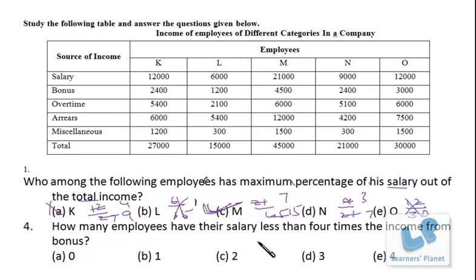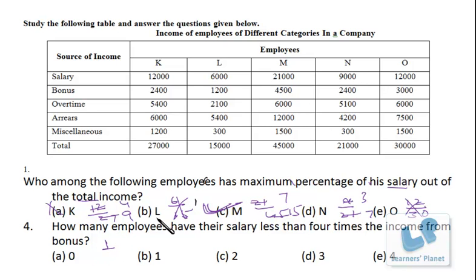How many employees have their salary less than 4 times their income from bonus? For K: 4 × 2,400 = 9,600 but salary exceeds that — not valid. For L: 4 × 1,200 = 4,800 but salary exceeds that — not valid. For M: 4 × 4,500 = 18,000 but salary exceeds that — not valid. For N: 4 × 2,400 = 9,600 which is greater than the salary of 9,000 — valid. For O: 4 × 3,000 = 12,000 which equals the salary exactly, but we need strictly less — not valid. So only category N qualifies, giving the answer as 1.